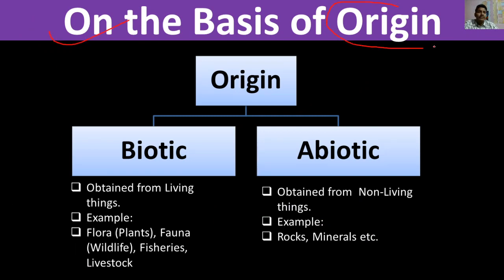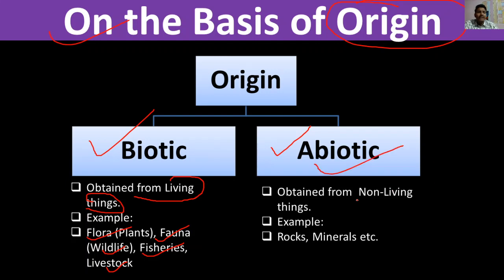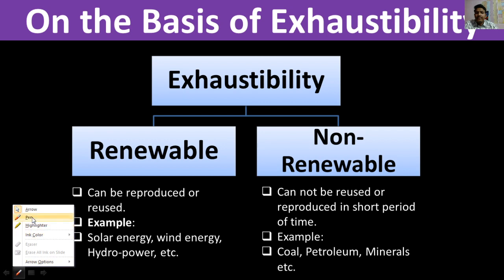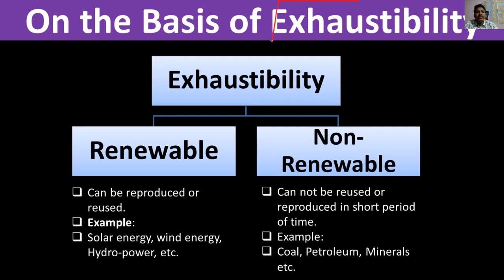On the basis of origin, we can classify resources into two groups: biotic and abiotic. Biotic resources are obtained from living things such as flora, plants, fauna, wildlife, fisheries, and livestock. Abiotic resources are obtained from non-living things like rocks and minerals.